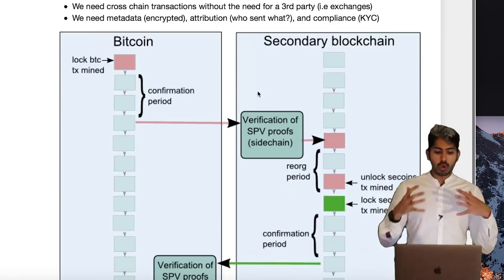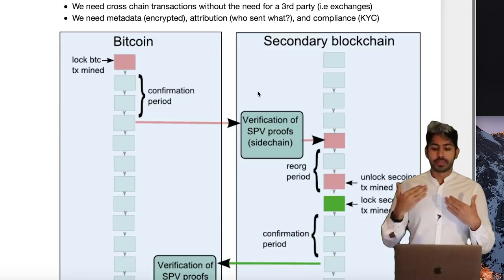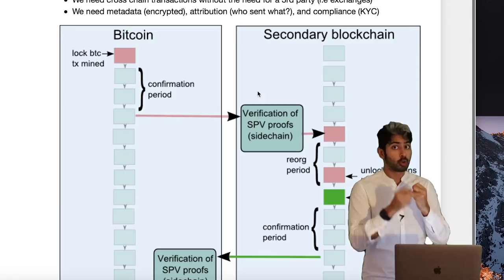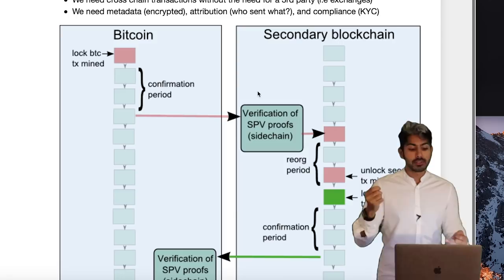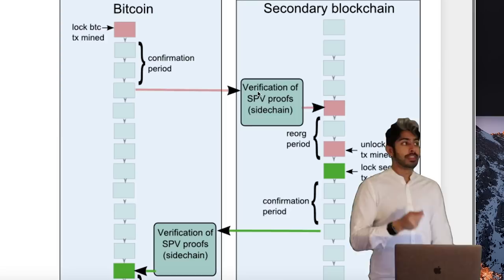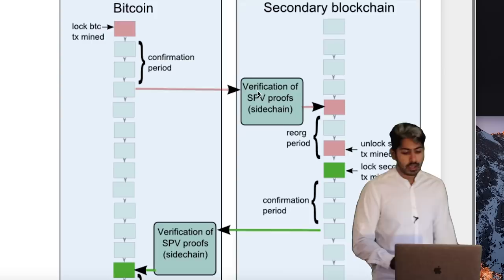We also need metadata — who is sending the transaction, with opt-in or opt-out visibility. We need attribution — who sent what — and we need compliance like KYC. For Bitcoin, there's the sidechain proposal where you peg an altcoin to Bitcoin, which would require a change inside the Bitcoin network that developers have to accept. It's in the works.